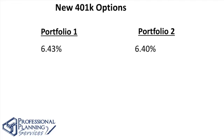You were so highly sought that another company immediately picked you up. But this company had a couple of rules before you could come work for them. You had to roll your entire 401k from your old employer into your new employer's plan. They only had two choices: Portfolio One had an average rate of return of 6.43%, or Portfolio Two had an average rate of return of 6.4%. Where would you put your money? You had to pick one.